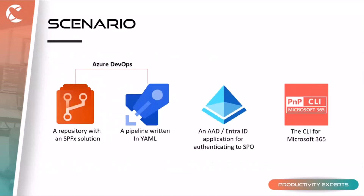So why not use automation? This talk is about using Azure DevOps pipelines to do so. There are a few things you need: a repository with an SPFx solution, a pipeline written in YAML as part of that repository, one or more Azure AD apps to communicate with SharePoint, and of course my favorite — we always use the CLI for Microsoft 365 to reach several objectives.